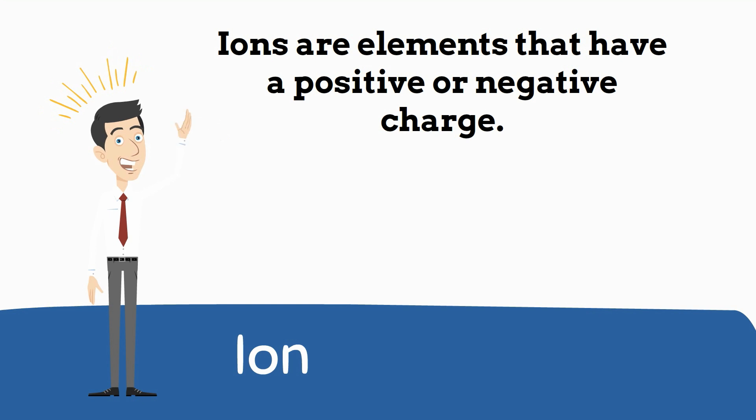Ions are elements that have a positive or negative charge. They are written with a plus or minus sign in the right upper corner.